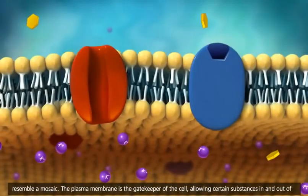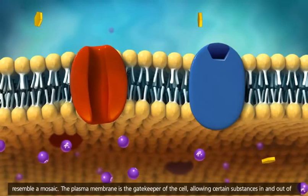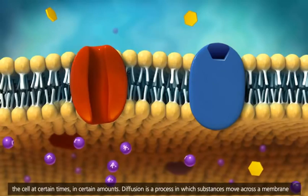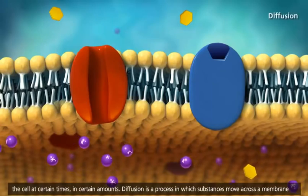The plasma membrane is the gatekeeper of the cell, allowing certain substances in and out of the cell at certain times in certain amounts. Diffusion is a process in which substances move across a membrane.